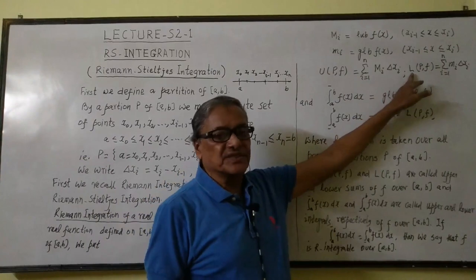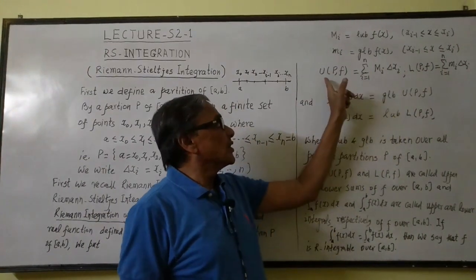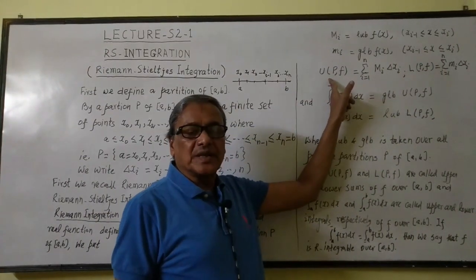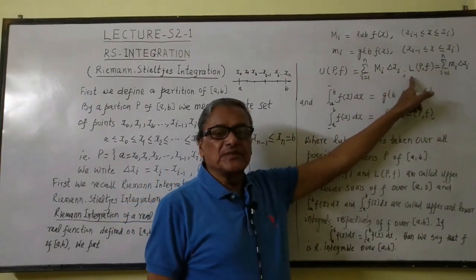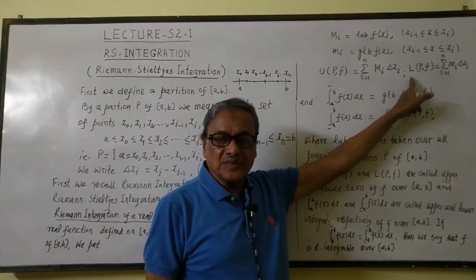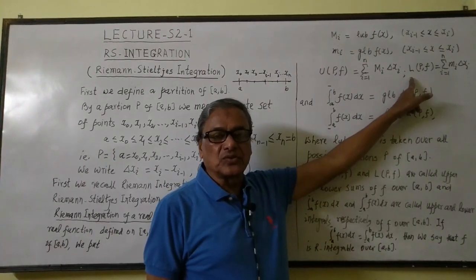Here U(P,f) and L(P,f), these two notations—this is called upper sum of f over closed interval [a,b], and this is called lower sum of function f over closed interval [a,b].